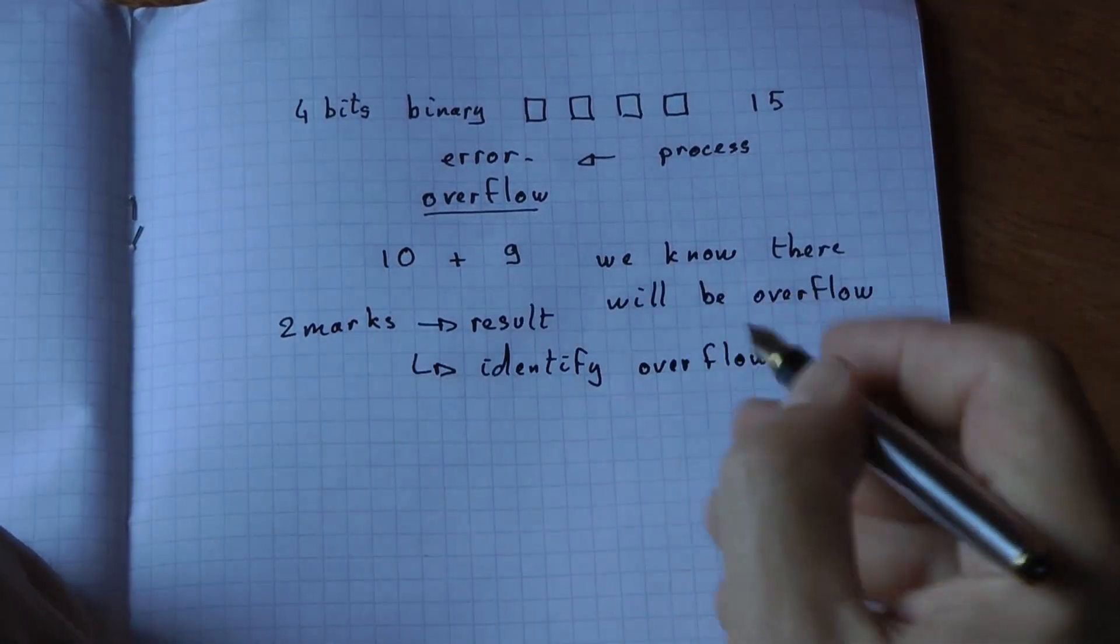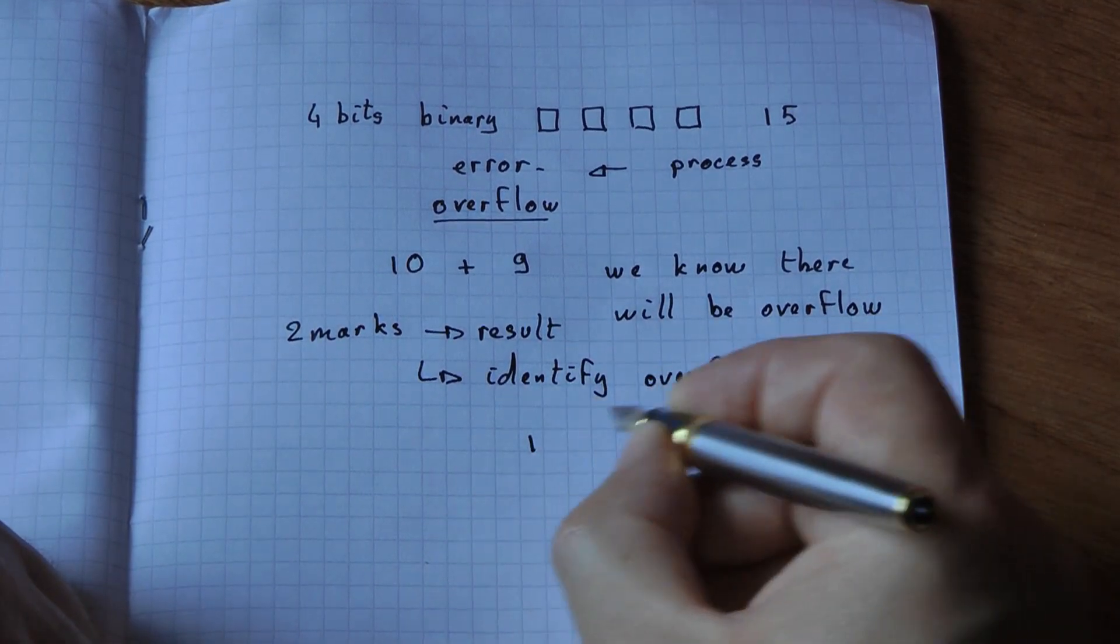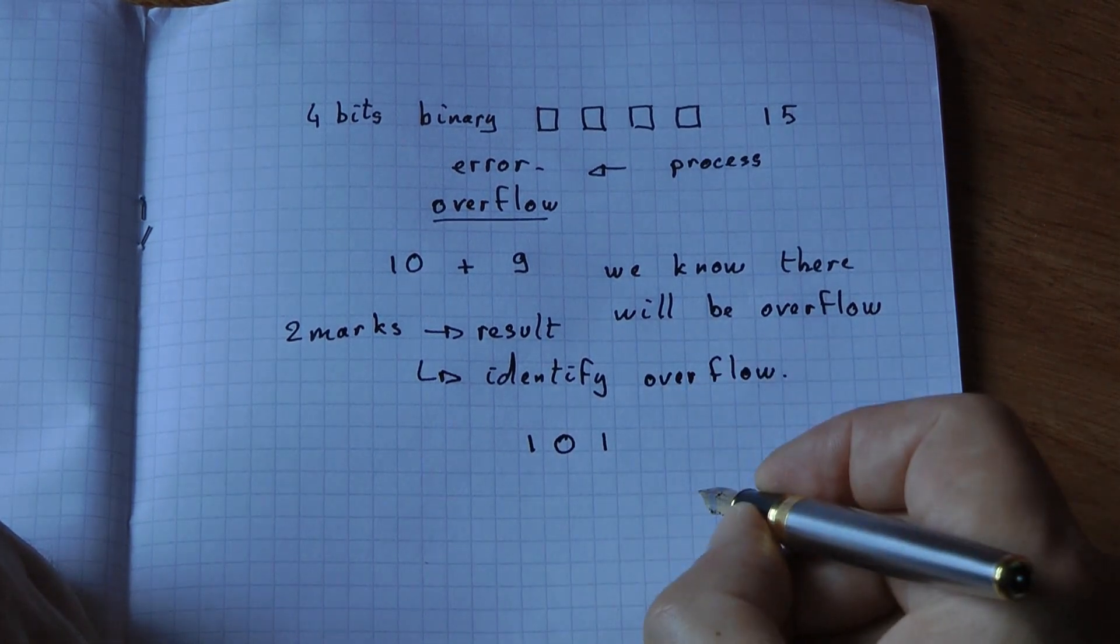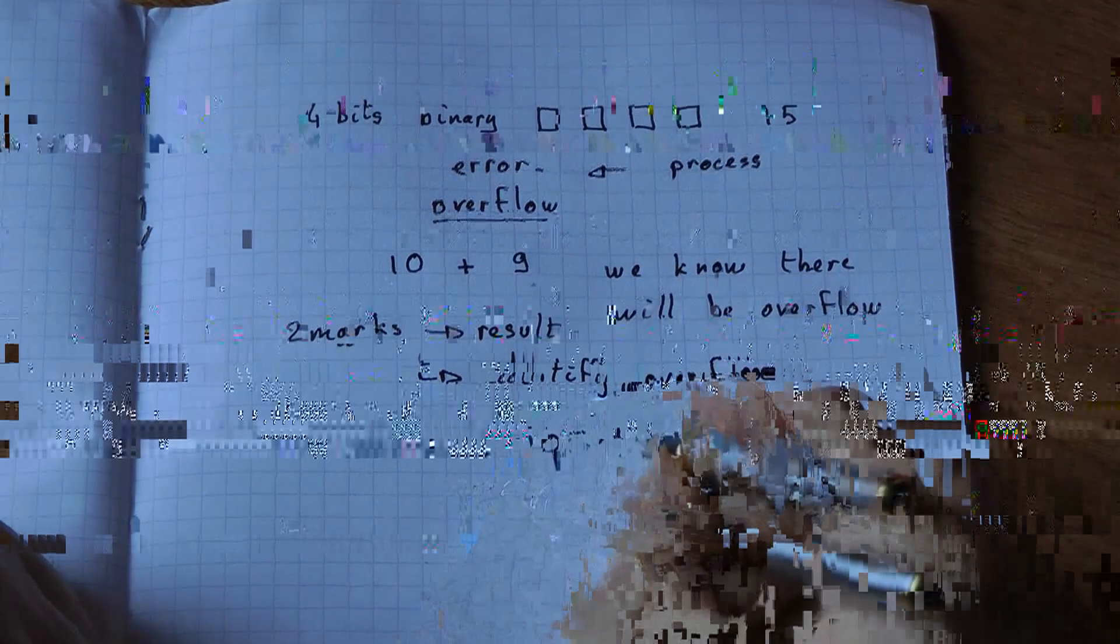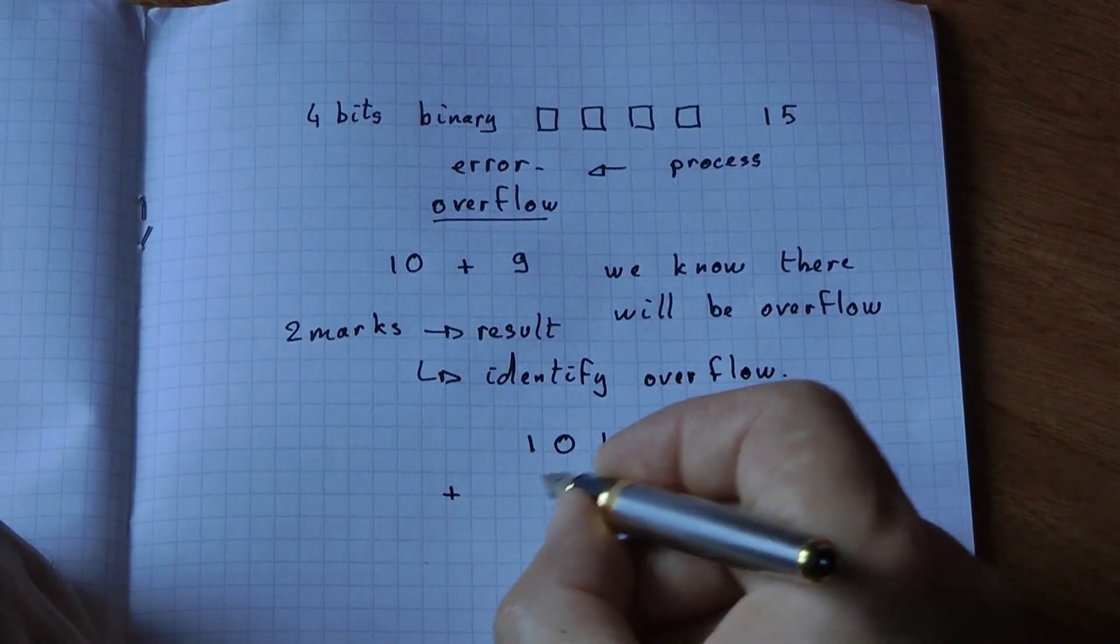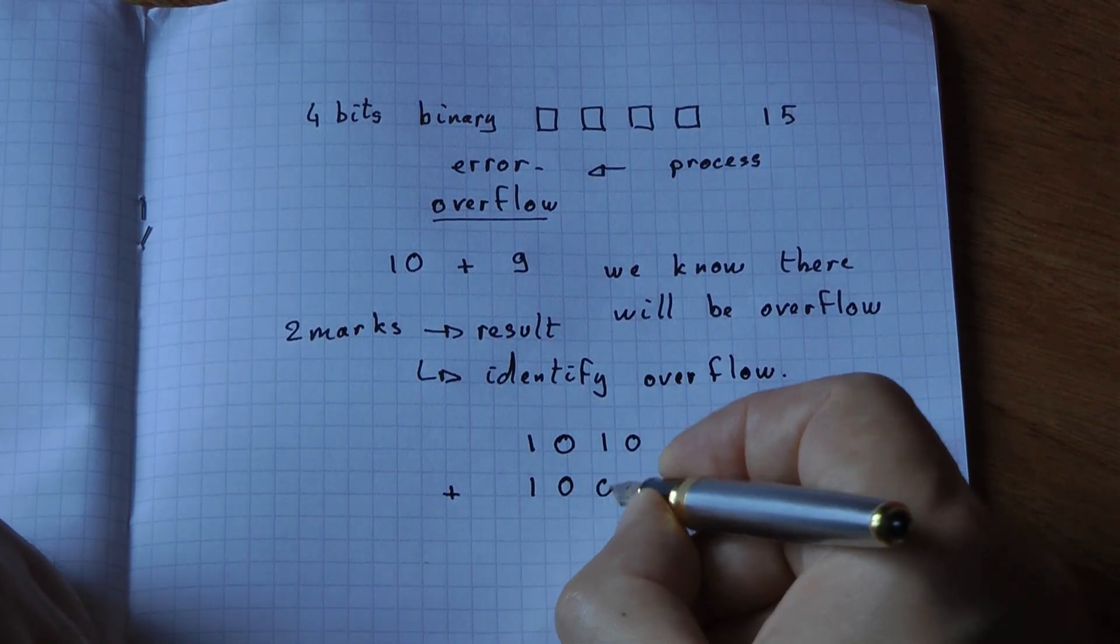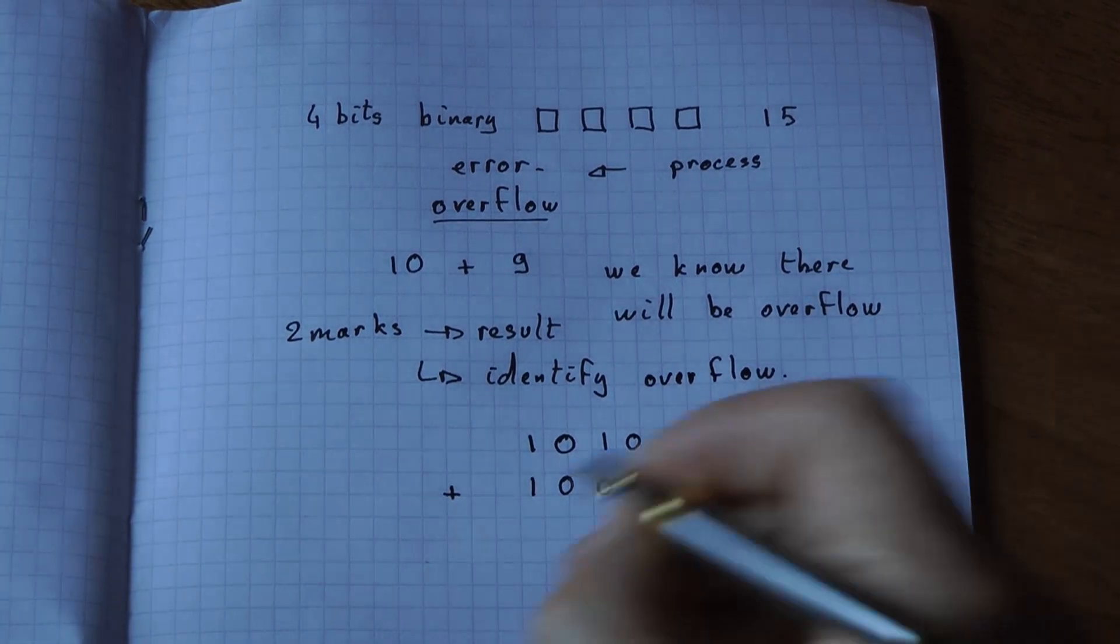So, 10—what is 10? It's made of an 8, no 4, a 2, and no 1. Plus 9—what is 9? It's an 8, no 4, no 2, and a 1. If I do the addition...